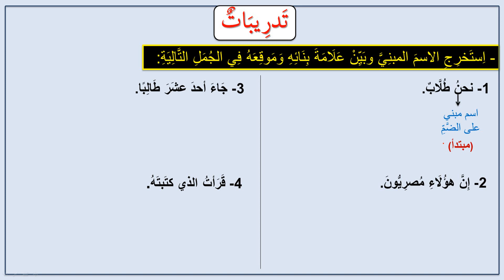Second: Inna ha'ula'i masriyyun. The ism mabni is ha'ula'i — mabni 'ala al-kasr, and its position is ismu inna. Third: Ja'a ahadun 'ashara taliban. The ism mabni is ahada 'ashara — mabni 'ala fath al-juz'ayn, meaning both parts have fatha: ahada 'ashara. Its position in the sentence is fa'il. The meaning is: eleven students came. Talib here is tamyiz, which is an advanced topic.